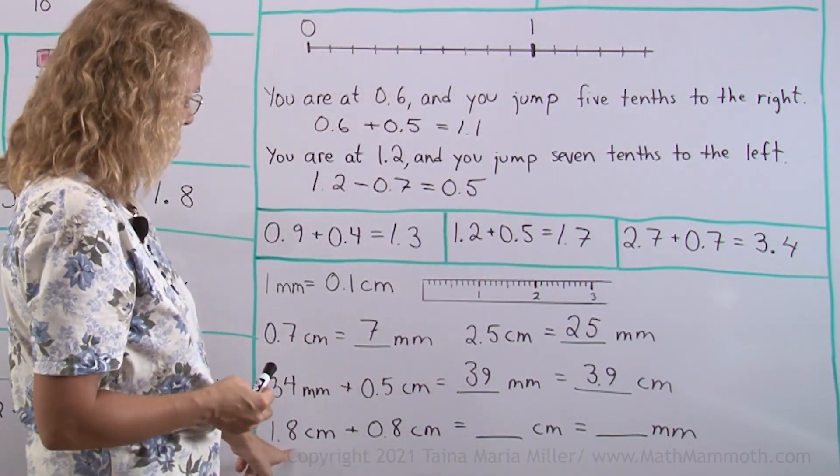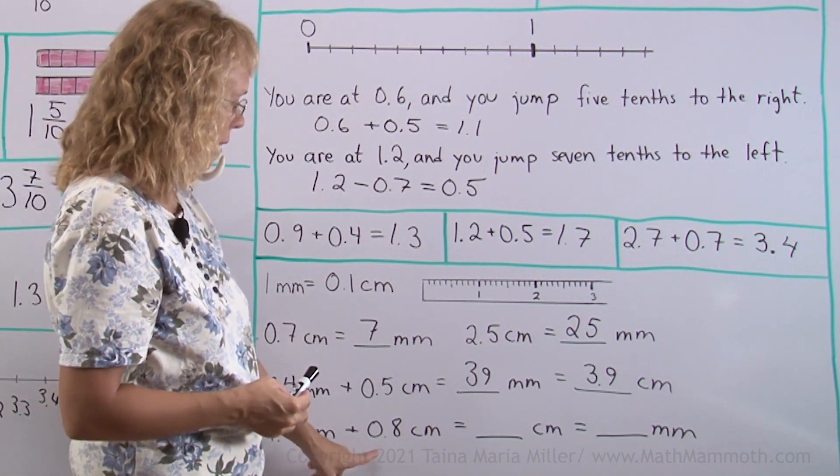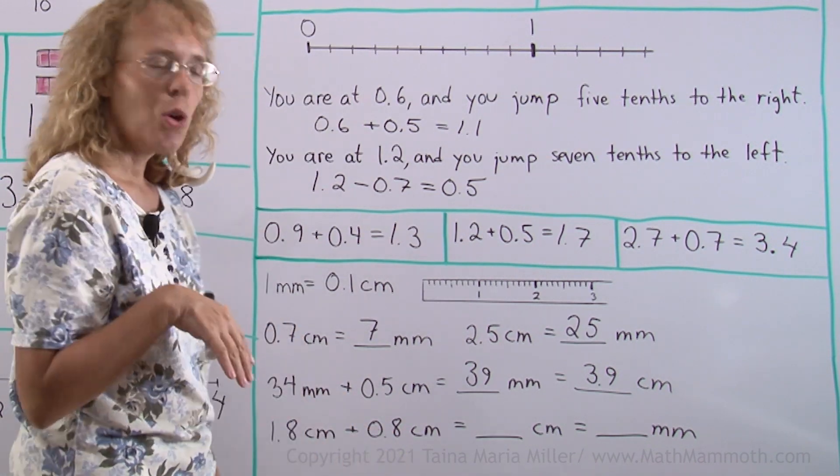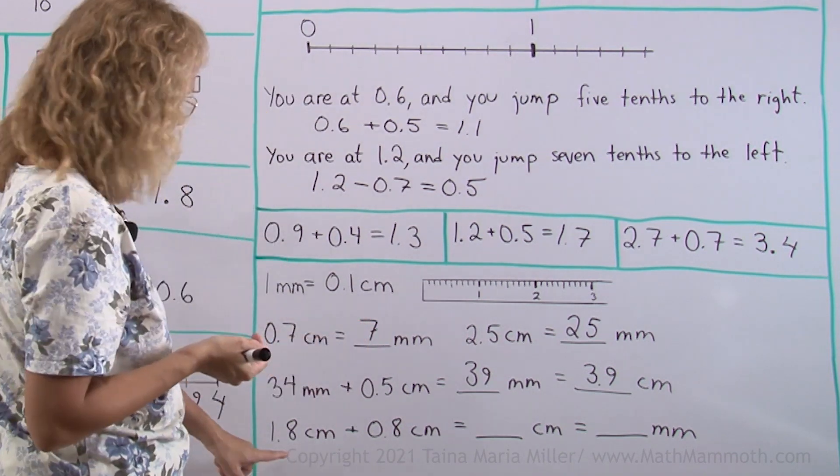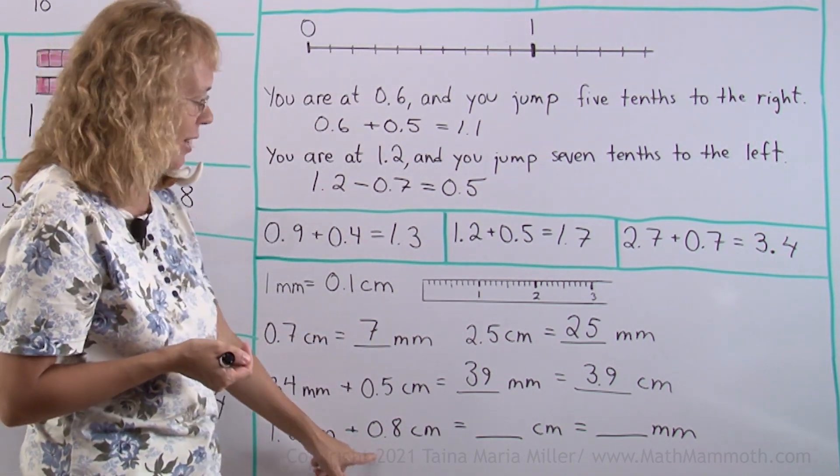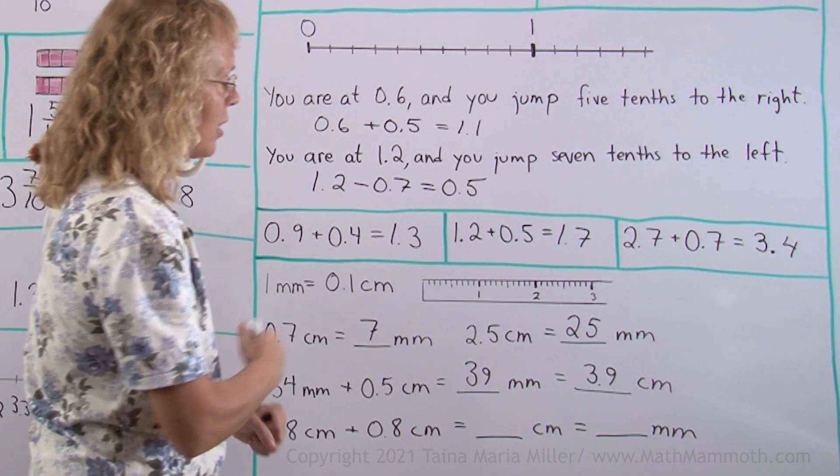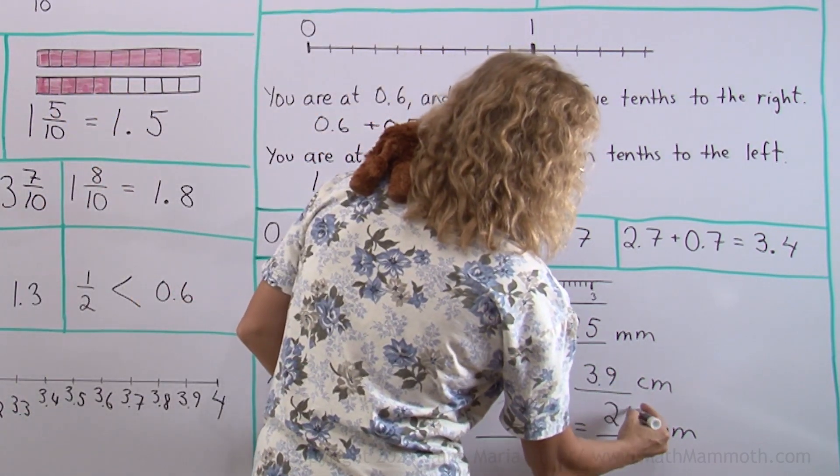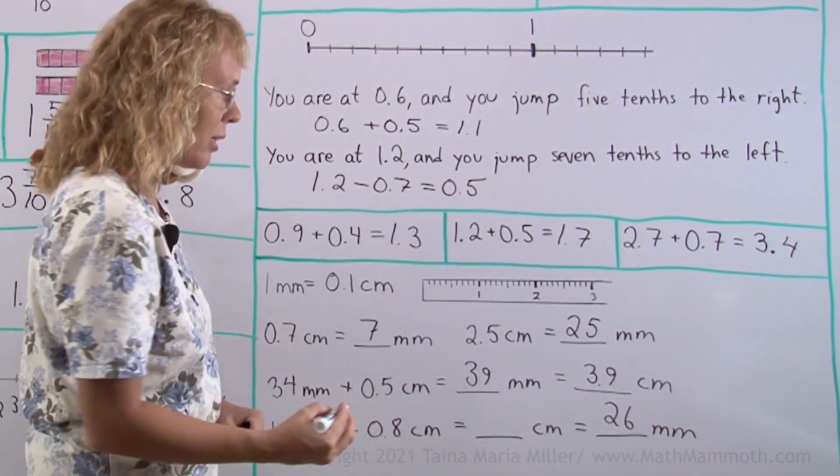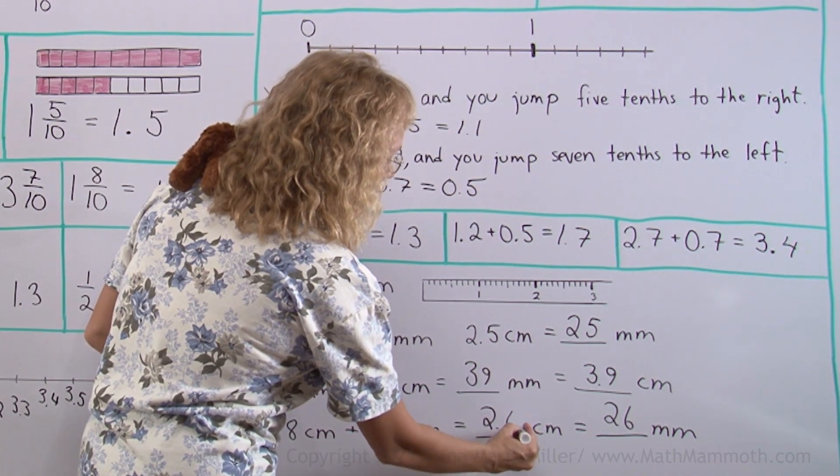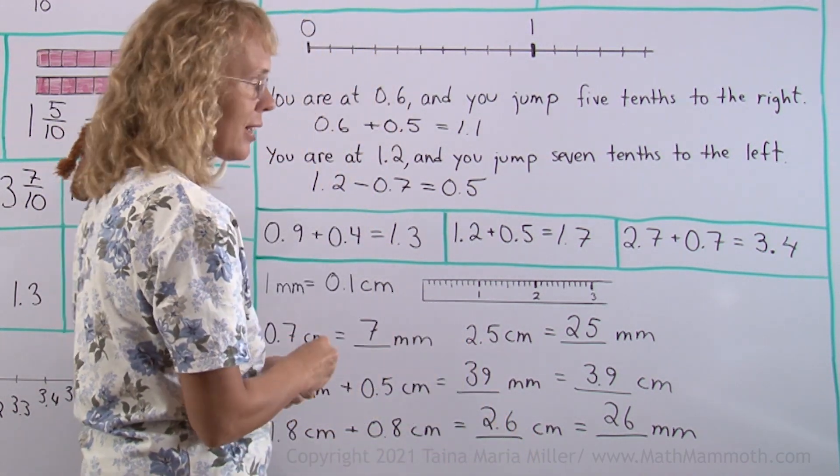Here, 1.8 centimeters plus 0.8 centimeters. Okay. Maybe we want to think in millimeters and think that this is 18 millimeters and this is 8 millimeters. So we get 26 millimeters. But in centimeters, it would mean 2 whole centimeters and 6 tenths of a centimeter. 2.6 centimeters.